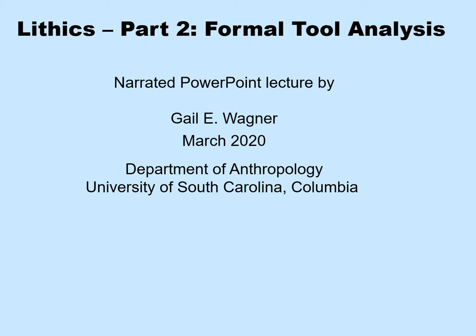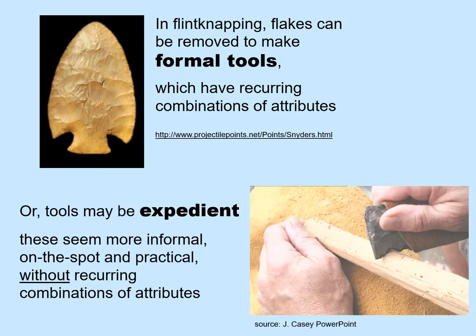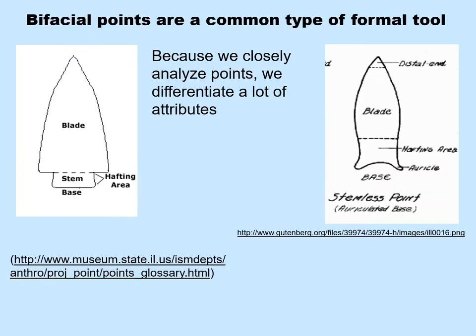Now that we've covered some of the basic terminology associated with lithic analysis, let's move on to talk about formal tool analysis and the characteristics or attributes that you should know. In flintknapping, flakes can be removed to make formal tools, which have recurring combinations of attributes. There are other types of tools that seem more informal, on the spot, and practical — we call these expedient tools, tools without recurring combinations of attributes. Let's talk today about bifacial points in particular, a very common type of formal tool.